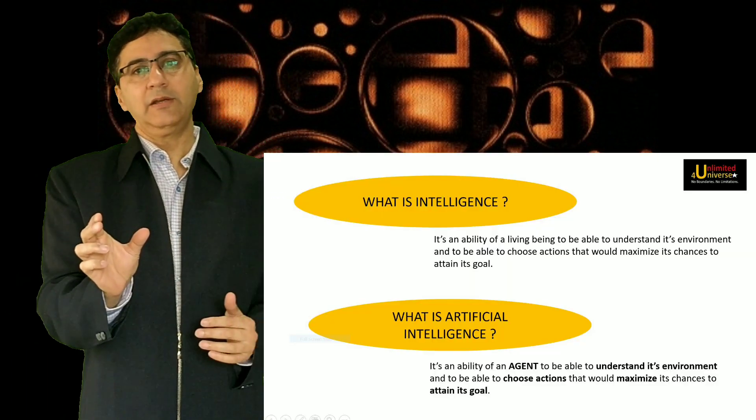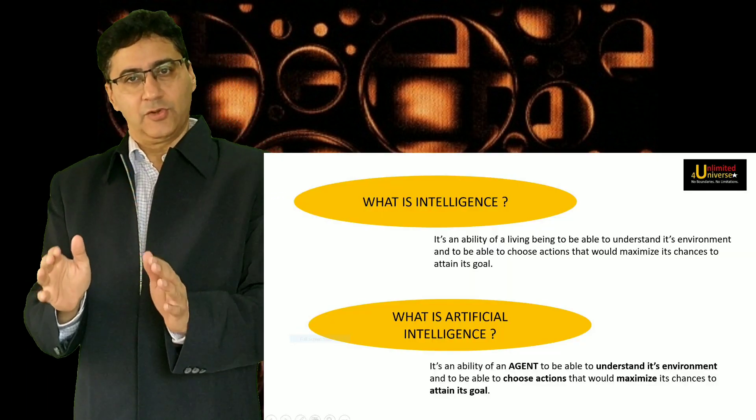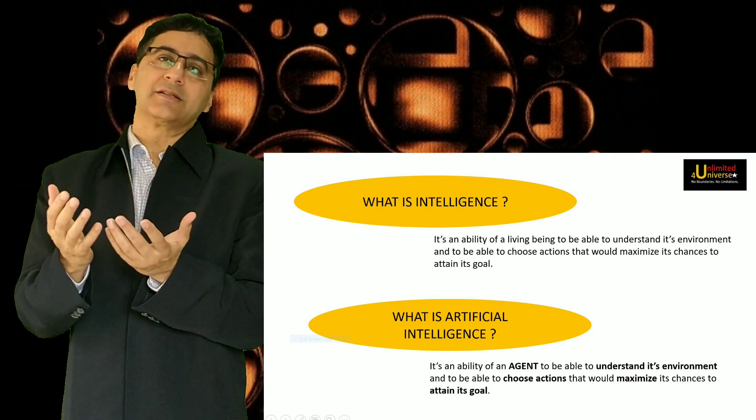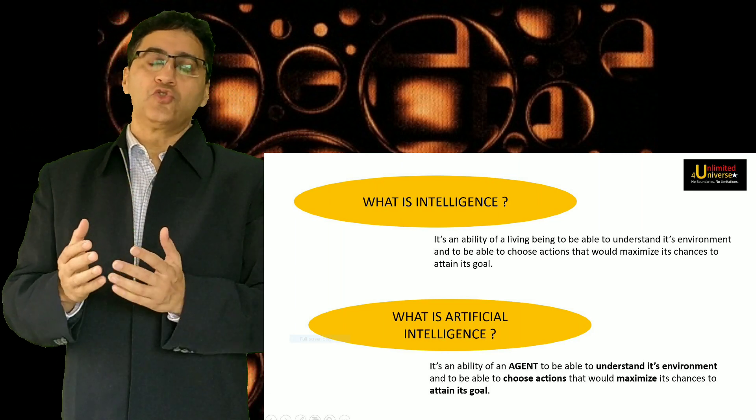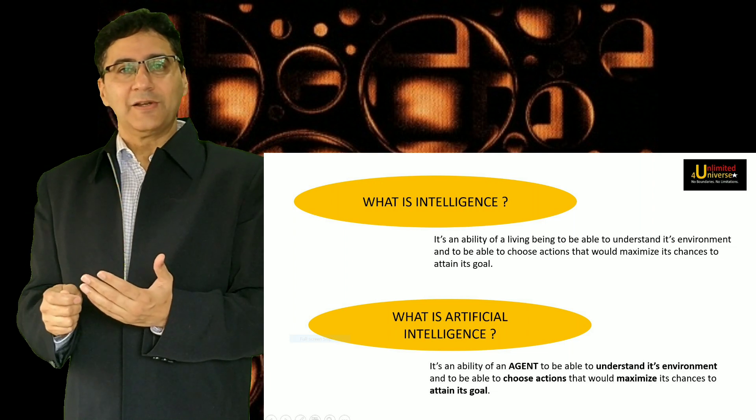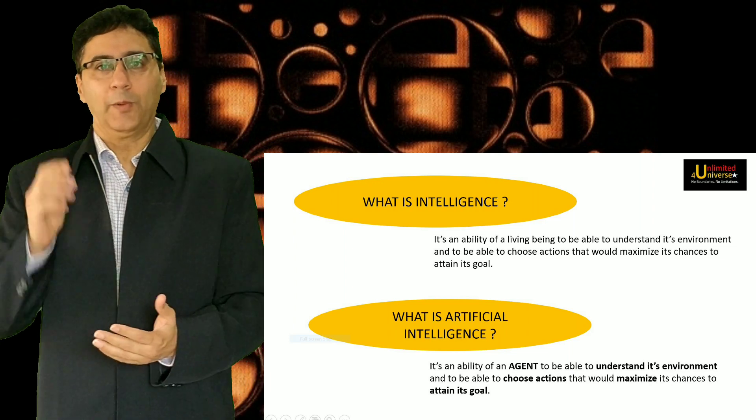So what is Artificial Intelligence? You substitute the human being with an agent. So it is the ability of an agent to understand its environment and to choose actions such that it maximizes those actions to attain its goal. That is Artificial Intelligence.